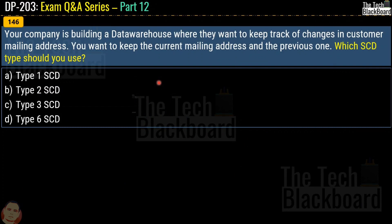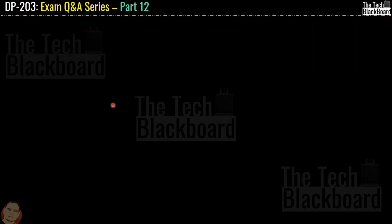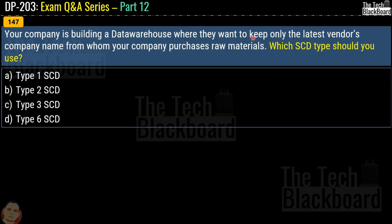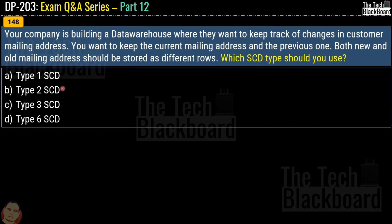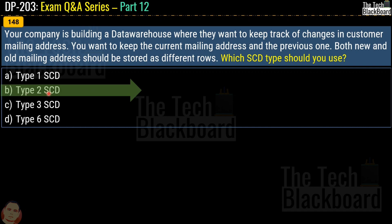Based on the Microsoft documentation, the correct answer for question 146 is option C — Type 3 SCD. Moving to question 147: your company wants to keep only the latest vendor company name. The correct answer is Type 1 SCD. For question 148: your company wants to keep track of changes in customer mailing address, keeping current and previous addresses stored as different rows. The correct answer is option B — Type 2 SCD.